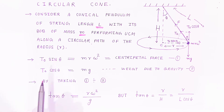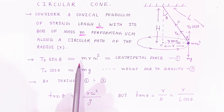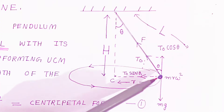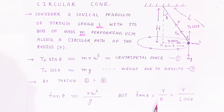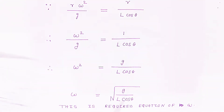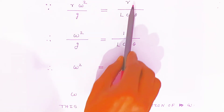Taking the ratio T sinθ / T cosθ, T cancels to give tanθ = mrω² / mg. Mass m cancels, giving tanθ = rω²/g. From the triangle geometry, tanθ = opposite/adjacent = r/h, where h = L cosθ. So tanθ = r/(L cosθ). Comparing: rω²/g = r/(L cosθ), and radius r cancels, giving ω²/g = 1/(L cosθ).